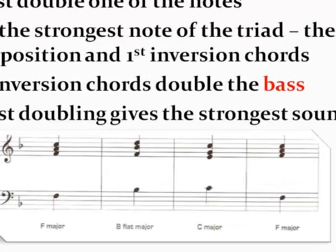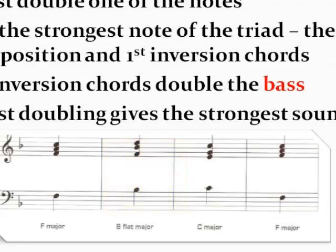In our first example, the root of the chord is F. Because we're in the key of F major, the F major chord is a I chord. In the second example we have a B flat major chord. The root is B flat, which is the 4th degree of the F major scale, making this a IV chord. Our third example is a C major chord. C is found on the 5th degree of the F major scale, so this C major chord is a V chord in F major. Of course the last one is a I chord in F major.